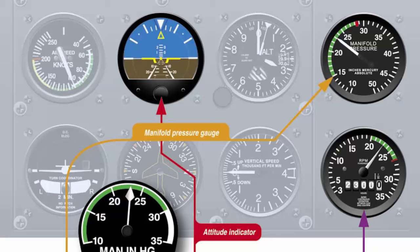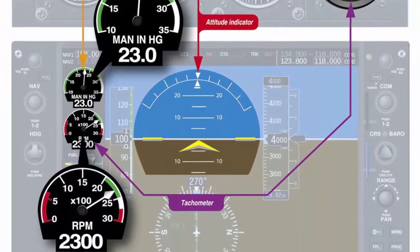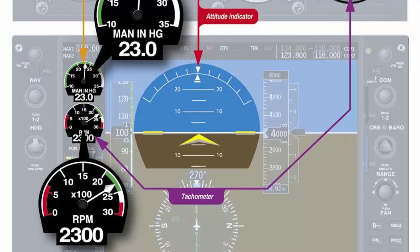Control instruments display immediate attitude and power changes and are calibrated to allow adjustments in precise increments. The primary instrument for attitude display is the attitude indicator. The control instruments do not indicate the aircraft's speed or altitude. In order to determine these variables and others, a pilot must reference the performance instruments.